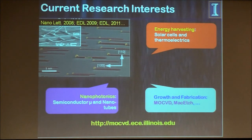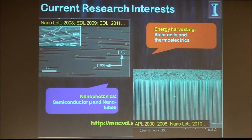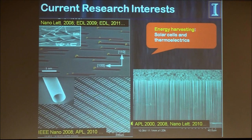The topic I'm going to be focusing on is nanowire-based transistors. This is an array of silicon nanowires with an aspect ratio of 100 to 1, using an anisotropic wet chemical etching technique. We also have a thrust doing tube-based photonics and other applications.